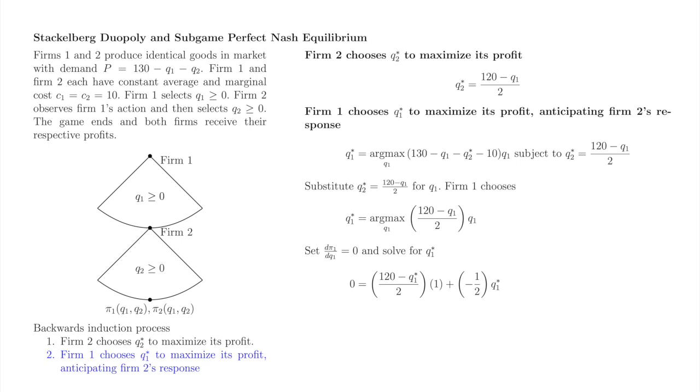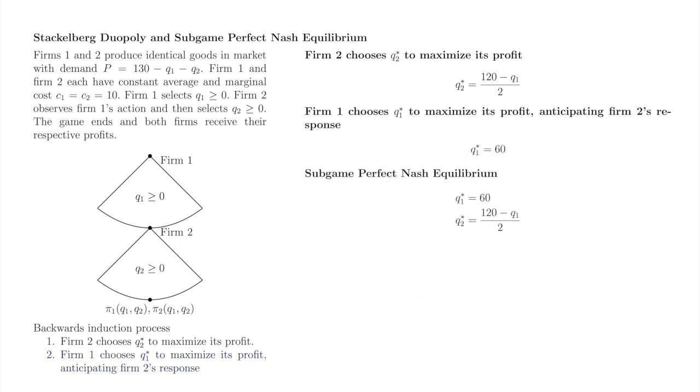Once again, our friend the product rule to the rescue. Clear the denominators and solve for q1 star. We're at the top of the tree, so backwards induction is done. The results of steps 1 and 2 specify the unique subgame perfect Nash equilibrium of this Stackelberg game. Using the subgame perfect Nash equilibrium strategies, we see that the corresponding path of play is firm 1 produces 60 and firm 2 produces 30.